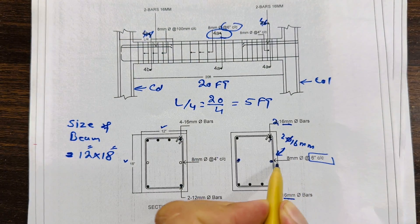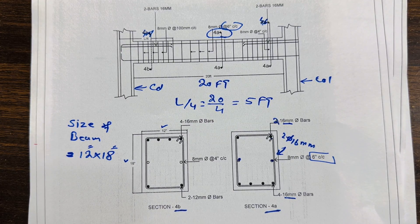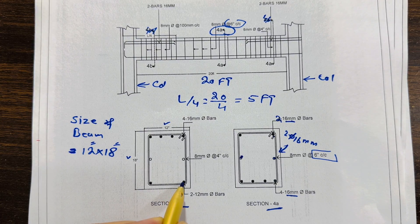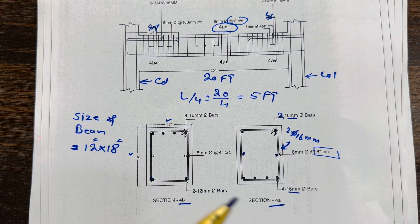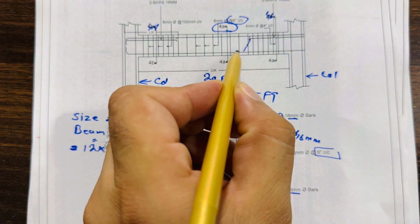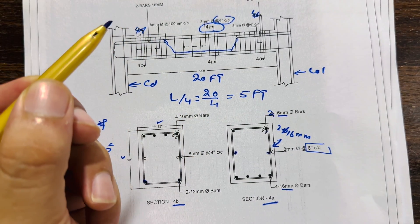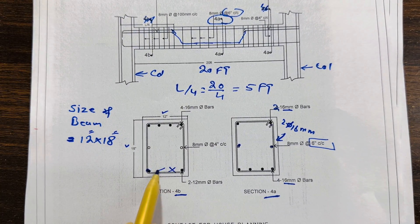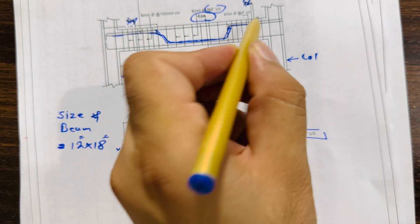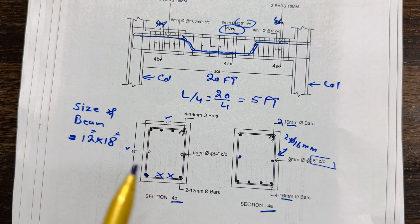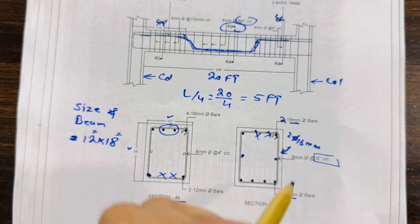Now for Section 4B: here we have two bars and two extra bars — also called bent-up bars or crank bars. These crank bars are bent up from the bottom. In this section we don't have additional separate top bars because the crank bars already serve that purpose.